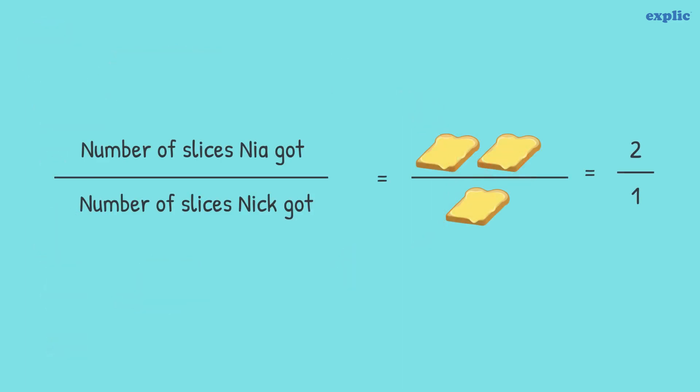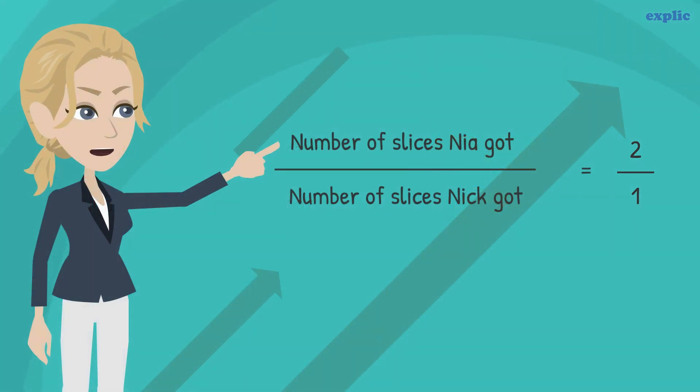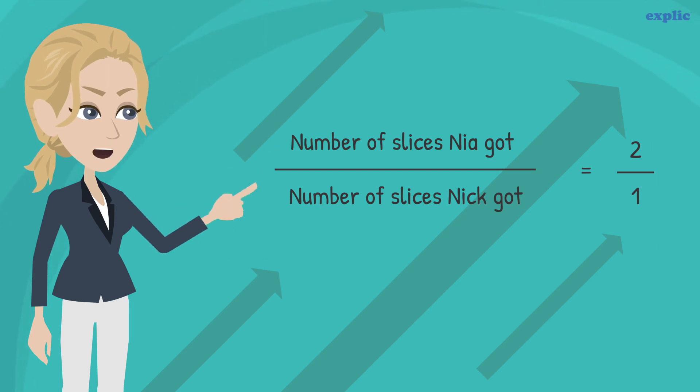This can also be written in the form of division. Comparison of the number of slices of bread is an example of ratio. We can say that the ratio of the number of slices Nia got to the number of slices Nick got is two by one.